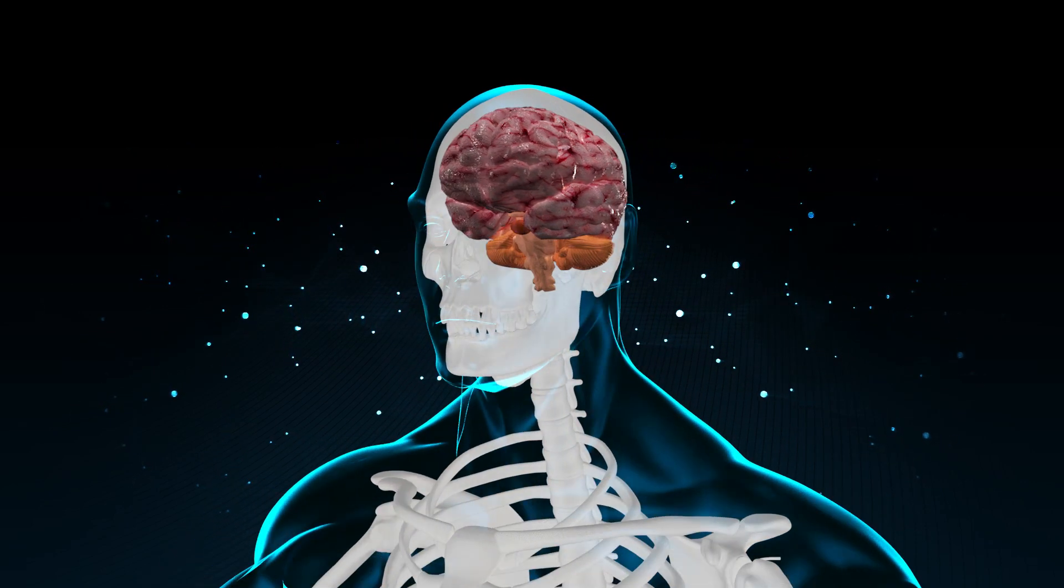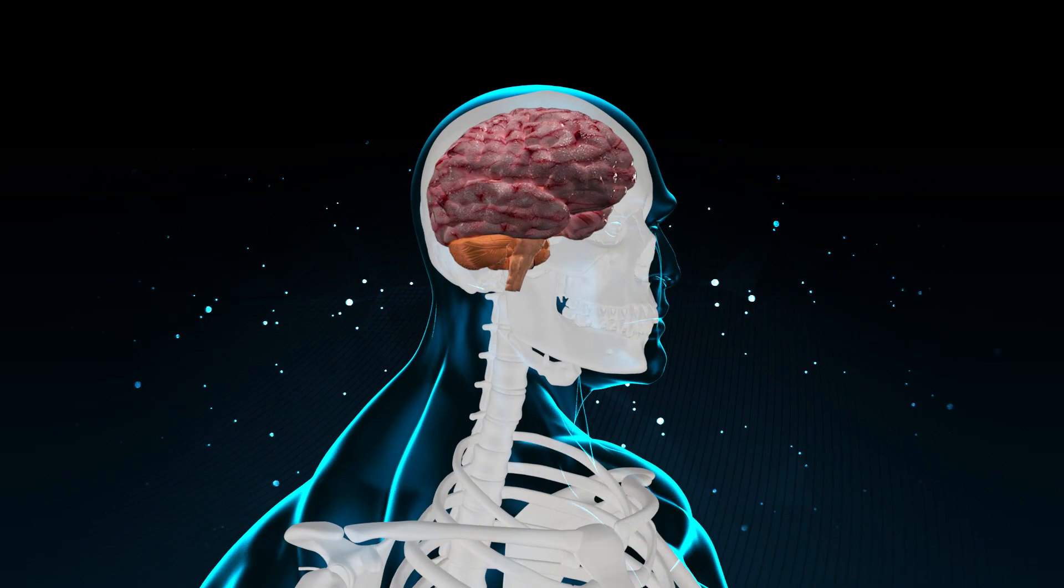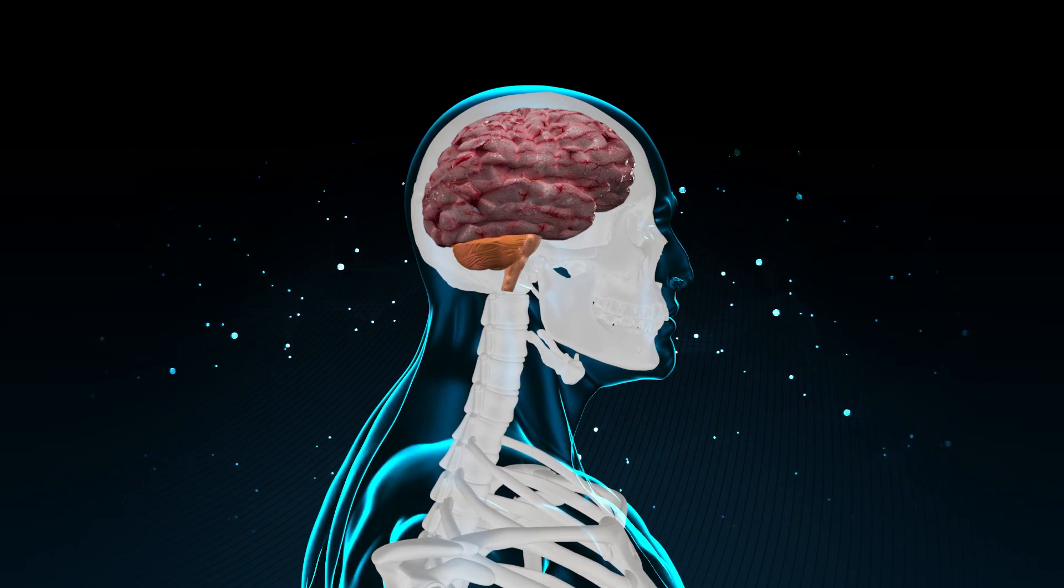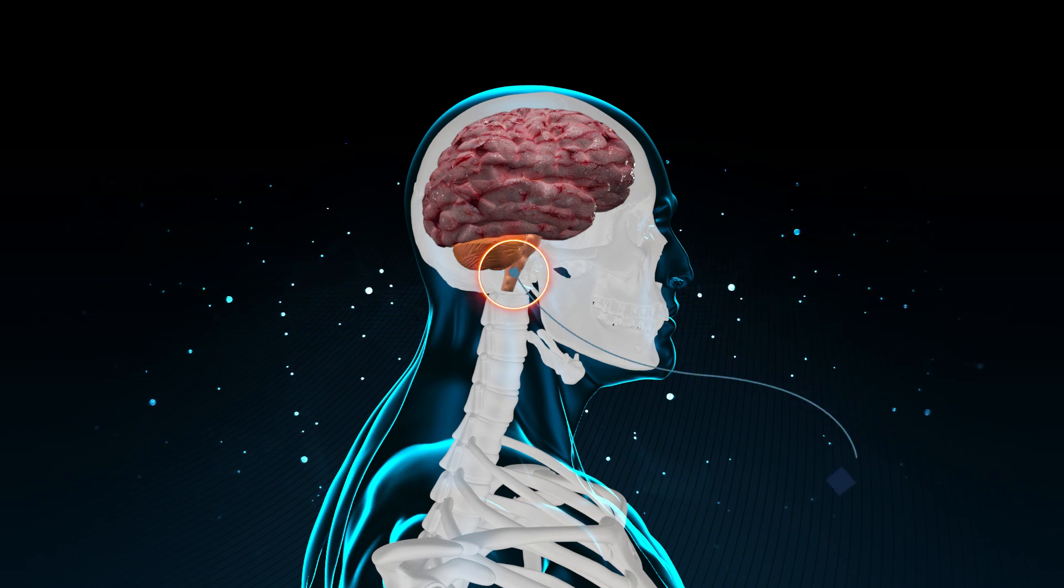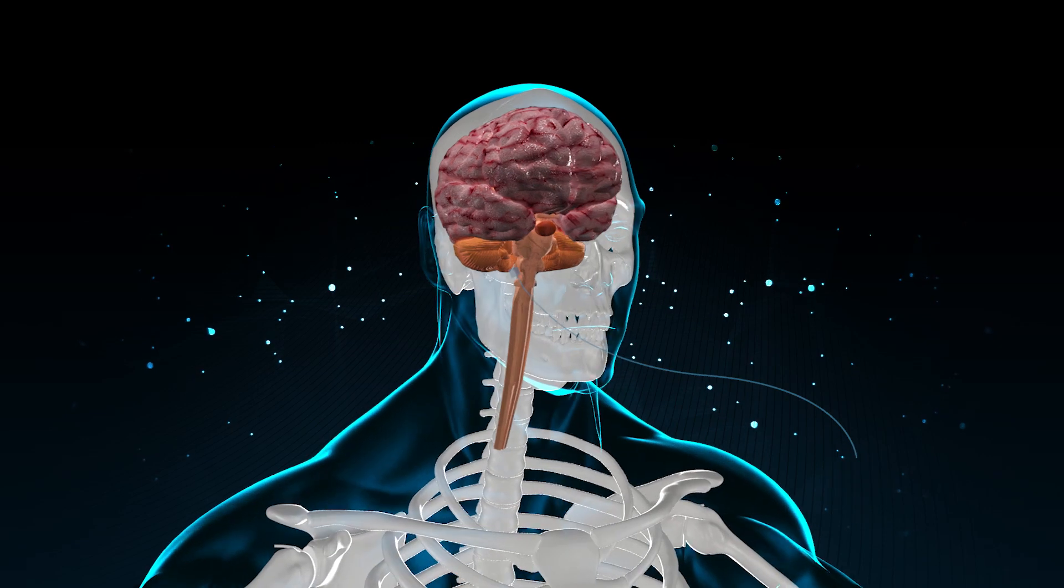The skull supports musculature and structures of the face and forms a protective cavity for the brain. Hence, all bones of cranium are flat bones and immovable joints which protects the brain. The base of the skull consists of an opening through which medulla oblongata of the brain passes as spinal cord.